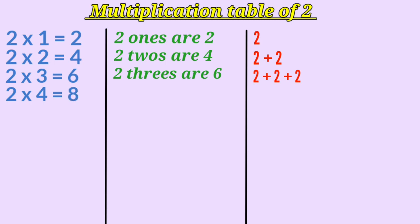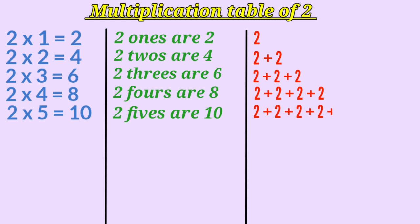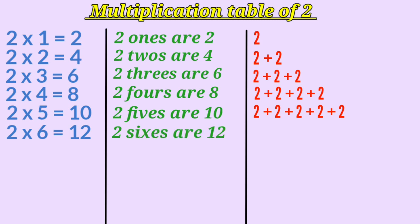2 multiplied by 4 is 8. Or, 2 fours are 8. So, here we are adding number 2, 4 times — that is, 2 plus 2 plus 2 plus 2. 2 multiplied by 5 is 10. Or, 2 fives are 10. Here we are adding 2, 5 times — that is, 2 plus 2 plus 2 plus 2 plus 2. 2 multiplied by 6 is 12. Or, 2 sixes are 12. Which means we are adding number 2, 6 times — that is, 2 plus 2 plus 2 plus 2 plus 2 plus 2.